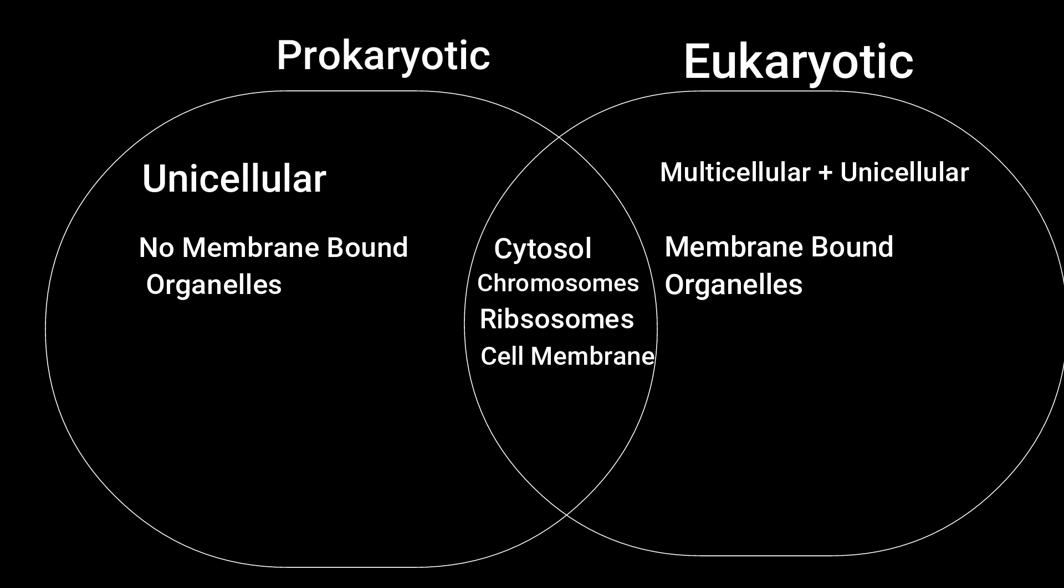Where prokaryotic cells have a nucleoid region where the DNA is located, eukaryotic cells have a nucleus which consists of three parts, the nucleolus, chromatin, and the nuclear envelope.